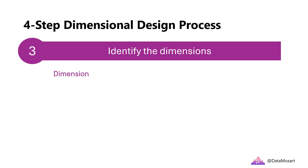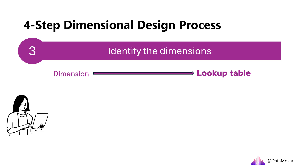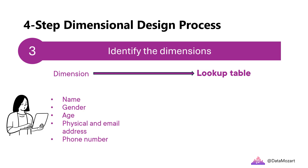Once you declare the grain, the next step is to identify dimensions. Let's forget about the name for a second and explain what a dimension really is. It's a special type of table that I like to think of as a lookup table — if you need more descriptive information about a certain object, that's what you'll find in the dimension table. Think of a person and its description: how would you describe a specific person? By name, gender, age, physical and email address, and probably phone number too.